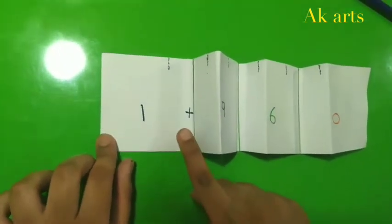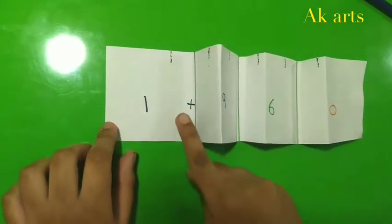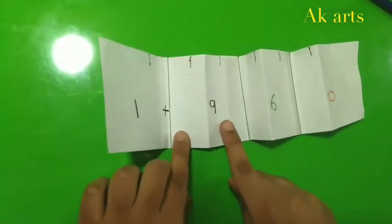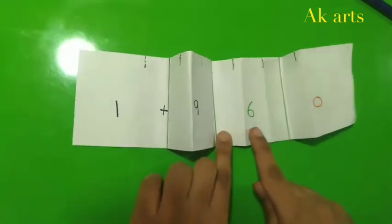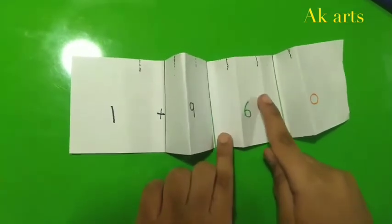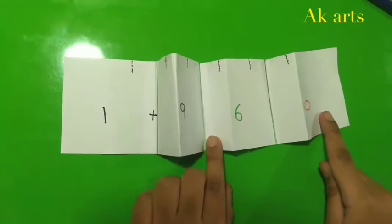This is thousands place, so we will write three zeroes. This is hundreds place, so we will write two zeroes. This is tens place, so we will write one zero. This is units place.